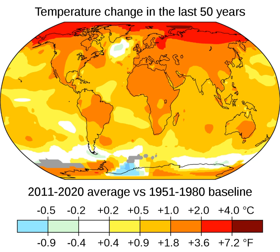Explosive volcanic eruptions represent the largest natural forcing over the Industrial Era. When the eruption is sufficiently strong, with sulfur dioxide reaching the stratosphere, sunlight can be partially blocked for a couple of years. The temperature signal lasts about twice as long. In the Industrial Era, volcanic activity has had negligible impacts on global temperature trends. Present-day volcanic CO2 emissions are equivalent to less than 1% of current anthropogenic CO2 emissions.